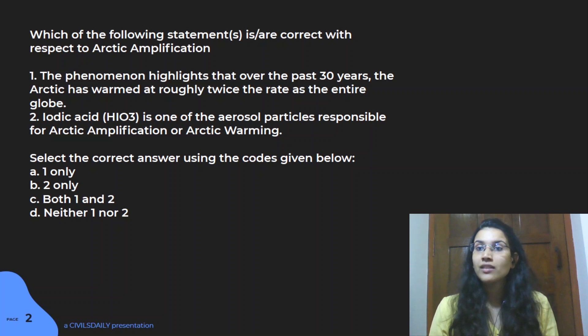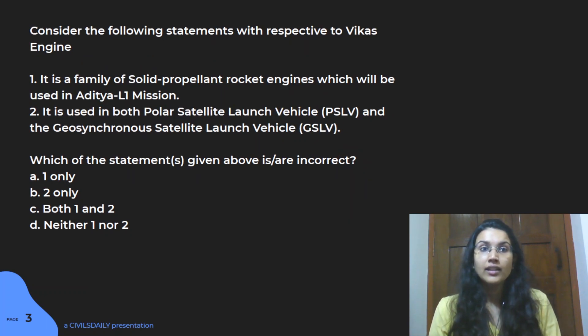Let's move on to the next question of the day. That question is related to space. We have a thing called Vikas Engine. It was in the news, so that's why you have this question. Two statements are given: it is a family of solid propellant rocket engines which are used in Aditya L1 Mission, and second, it is used both for Polar Satellite Launch Vehicle (PSLV) and Geosynchronous Satellite Launch Vehicle (GSLV). Which statements are incorrect? Be careful, you have to identify the incorrect statement.